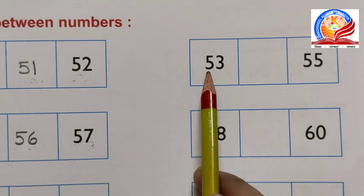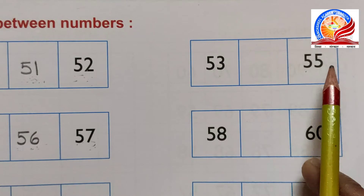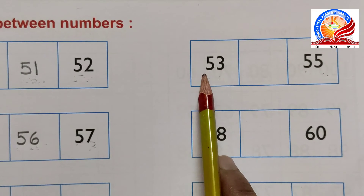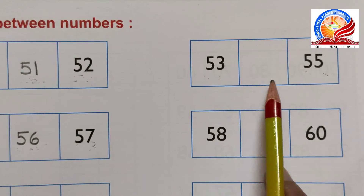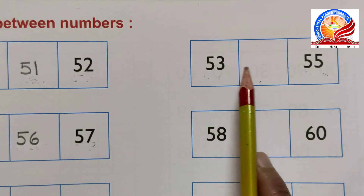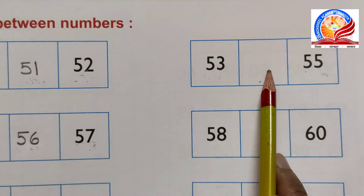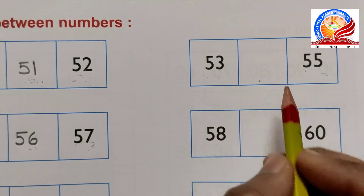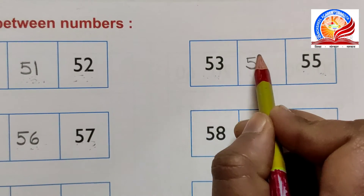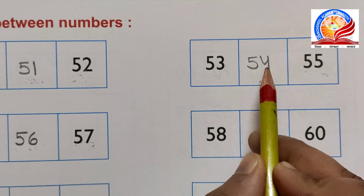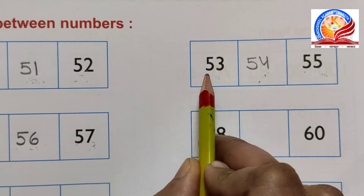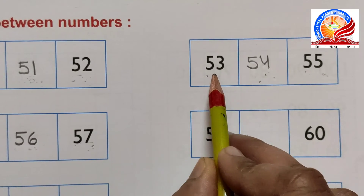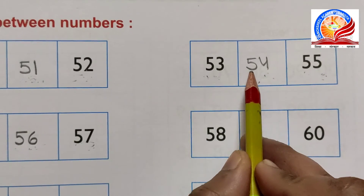Next, fifty-three and fifty-five. We have fifty-three and fifty-five. After fifty-three, kaun sa number aayega? 53 and 54. 54 is between 53 and 55. 54 - 53 aur 55 ka between number hai.